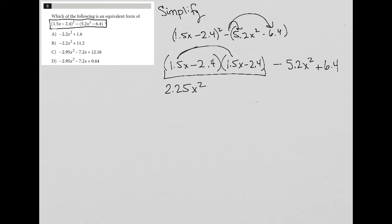Secondly, is 1.5x times negative 2.4. So 1.5 times 2.4 in my calculator. That is minus 3.6x.